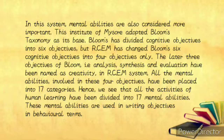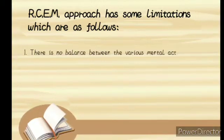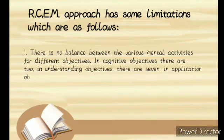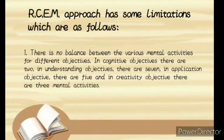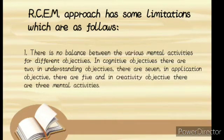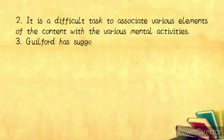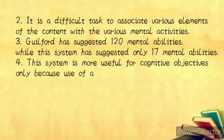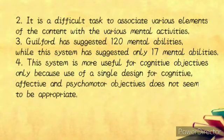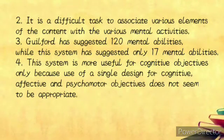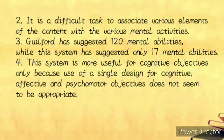The RCEM approach has some limitations. Number one, there is no balance between various mental activities for different objectives — in cognitive objectives there are two, in understanding there are seven, in application there are five, and in creativity there are three mental activities. Number two, it is difficult to associate various elements of content with various mental activities. Number three, Guilford has suggested 120 mental abilities while this system has suggested only 17. Number four, this system is more useful for cognitive objectives only, as use of a single design for cognitive, affective, and psychomotor objectives does not seem to be appropriate.